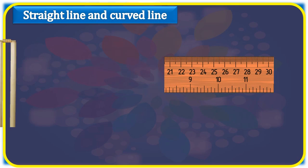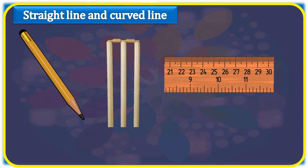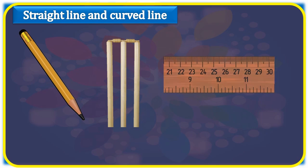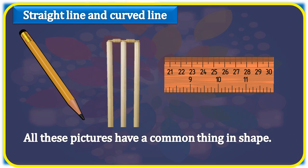Straight line and curved line. Hey kids, have you observed some pictures here? Yes, this is pencil. This is ruler. And these are stumps. Do you observe that all these pictures have a common thing in shape? Yes, all these are straight in shape.